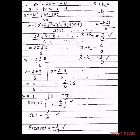In problem number 2, we have 3x squared minus 2x minus 1 equals 0. Let's say I want to use the quadratic formula to get the roots. The value of A is 3, the value of B is negative 2, and the value of C is negative 1. After writing the values of A, B, and C, write the quadratic formula.